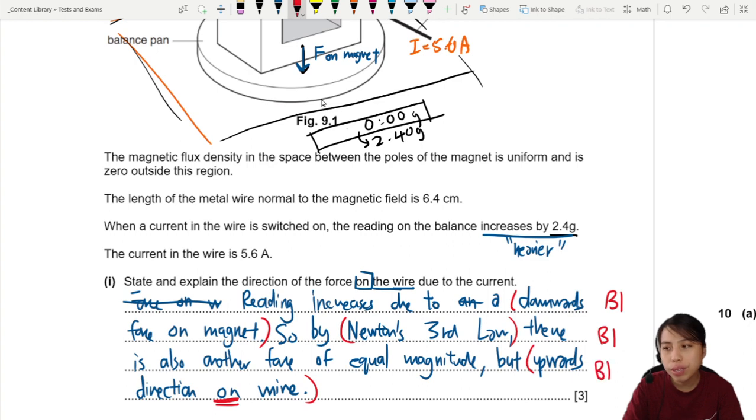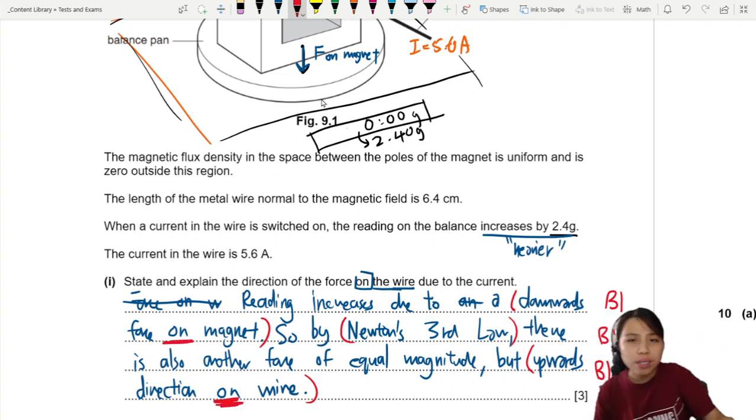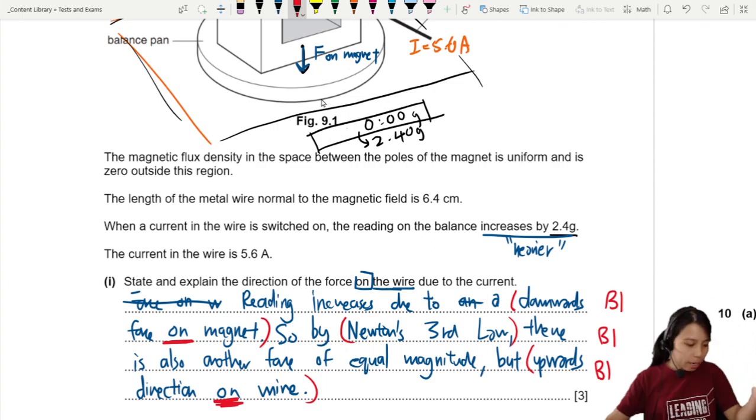A lot of people I notice, they just say, oh, there's a force upwards, there's a force downwards. But I'm like, which force? Force on magnet or force on wire? There's too many forces. You gotta specify. So, best if you say on magnet. On wire. From magnet. From wire. Where is the force? What is the force?